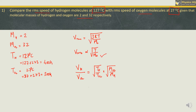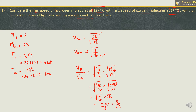Putting in the values: T_H = 400 K, T_O = 300 K, M_O = 32, M_H = 2. We get √(400/300) × √(32/2) = √(4/3) × √16 = (2/√3) × 4 = 8/√3. So the ratio of RMS speeds of hydrogen to oxygen is 8/√3.